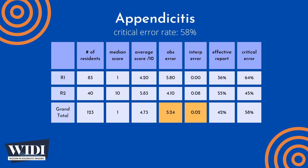Overall, the average number of points lost out of 10 due to observational discipline was 5.24. At the same time, 0.02 points were lost due to interpretive errors on the part of the resident. We define an effective report to be one which achieves scores between 7 and 10 — in terms of letter grades, this would be an A or a B. In this most missed case, 42% of residents produced effective reports.